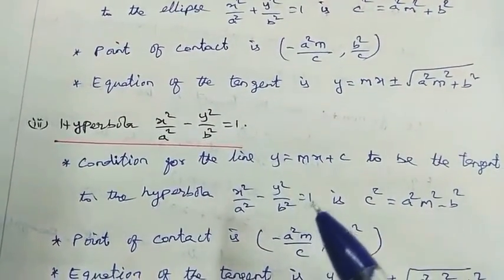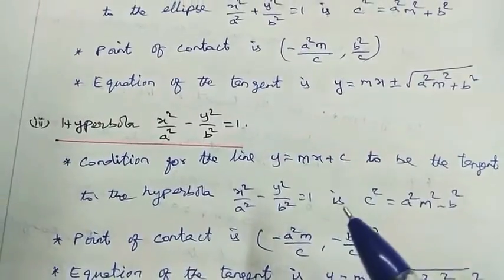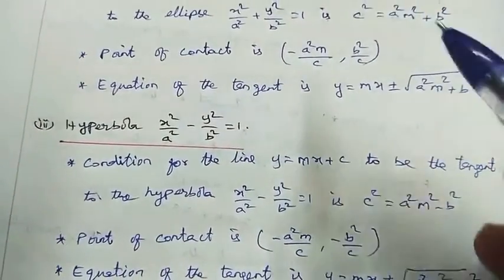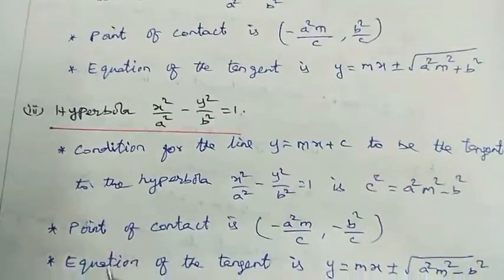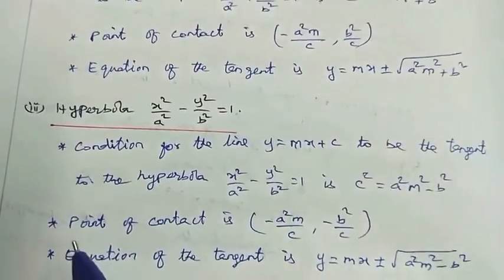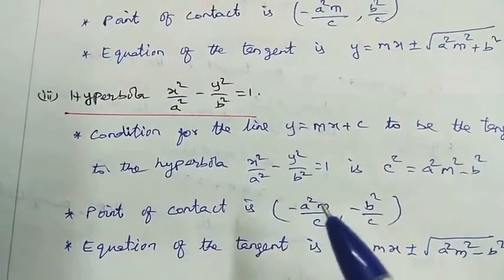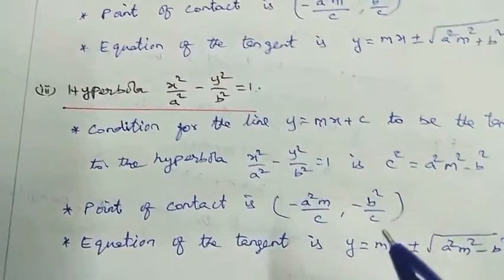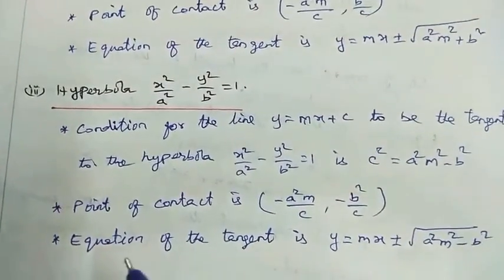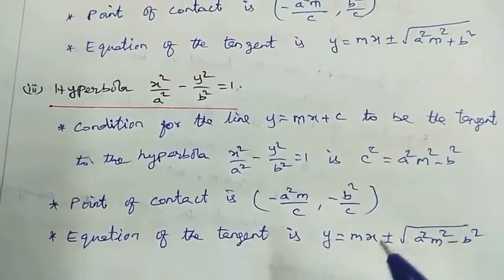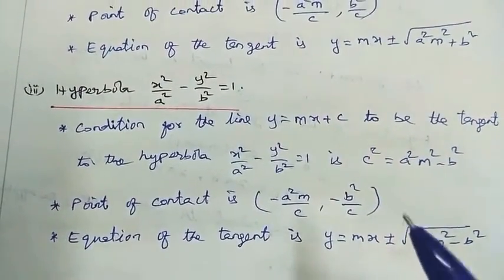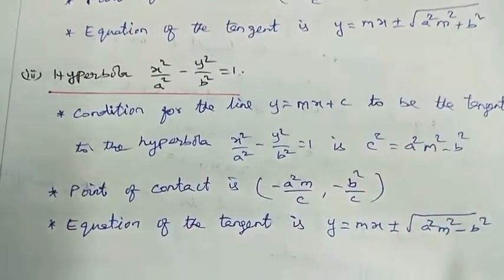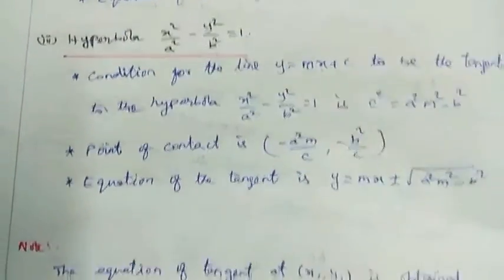Third one: for the hyperbola, the difference from the ellipse is that the sign changes from plus to minus. The condition is c square equal to a square m square minus b square. Point of contact is minus a square m by c, comma minus b square by c. Equation of the tangent is y equal to mx plus or minus square root of a square m square minus b square.